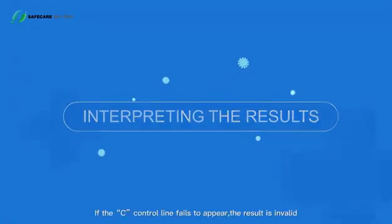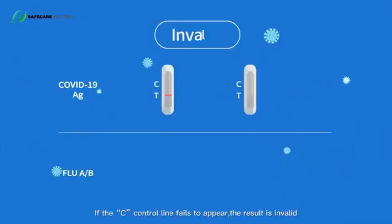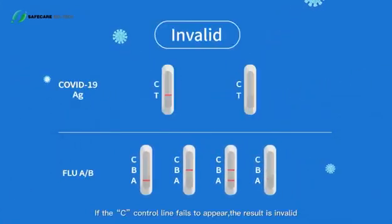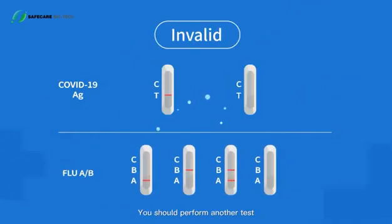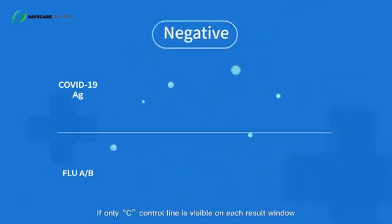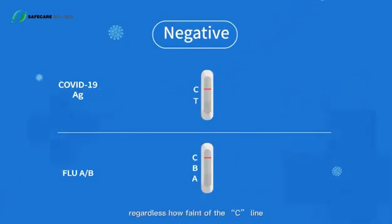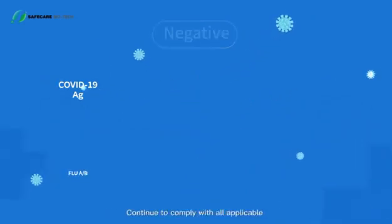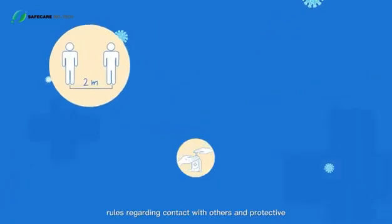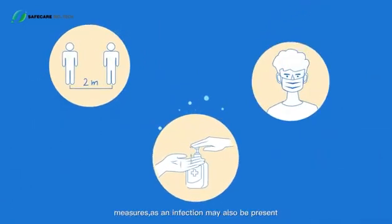Interpreting the results: if the C control line fails to appear, the result is invalid. You should perform another test. If only C control line is visible on each result window, regardless how faint the C line, the result can be interpreted as negative. Continue to comply with all applicable rules regarding contact with others and protective measures, as an infection may also be present if the test is negative.